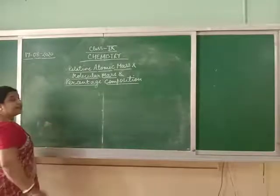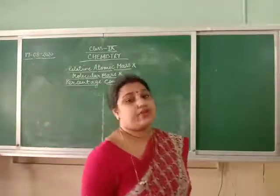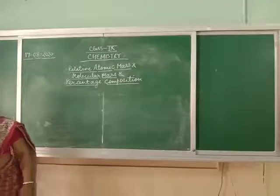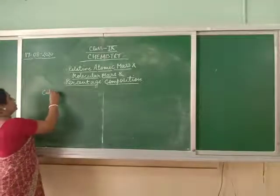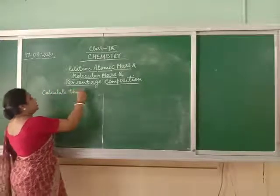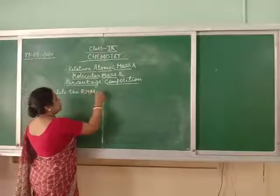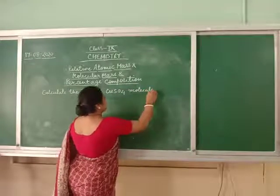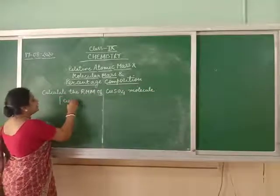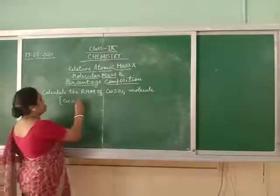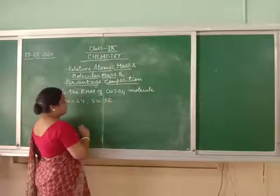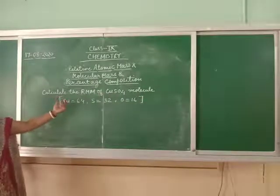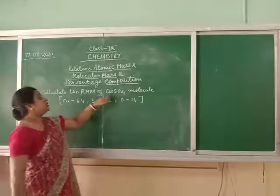The next point is the calculation of relative molecular mass — in short, RMM. If we know the relative atomic mass of each element, we can very easily calculate the relative molecular mass. For example, calculate the relative molecular mass of copper sulfate. Copper's relative atomic mass is 64, sulfur's relative atomic mass is 32.